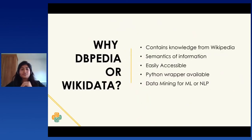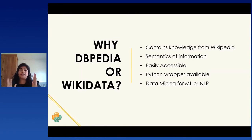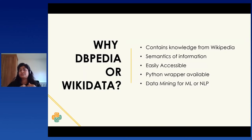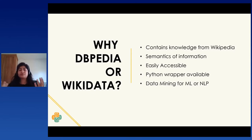The question naturally comes: why linked data, and why DBpedia or Wikidata? It contains huge knowledge, and with DBpedia or Wikidata the way the data is stored actually retains the semantics of information. It's rich for NLP applications where you need semantics — for example, PyLadies type organization and PyLadies location Dublin can naturally be inferred as 'PyLadies is an organization with a chapter in Dublin'. It's also easily and freely accessible, with a Python wrapper available, it's quite fast, and it's useful for data mining, machine learning, NLP, and computer vision applications.